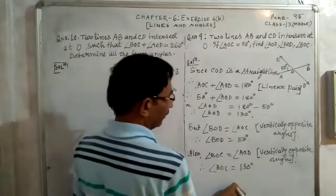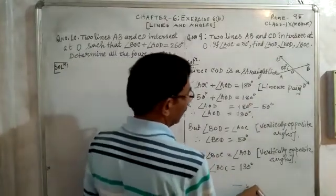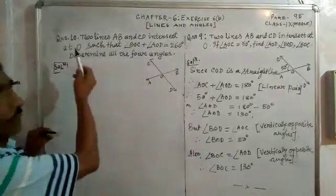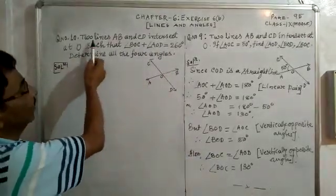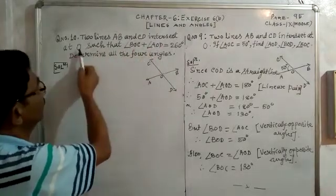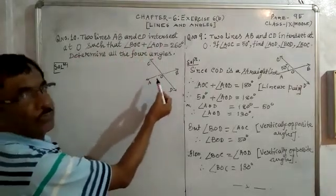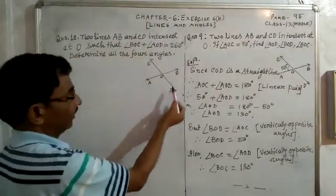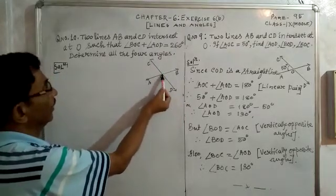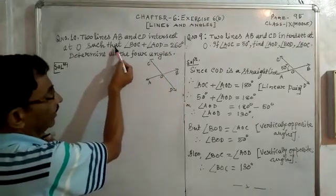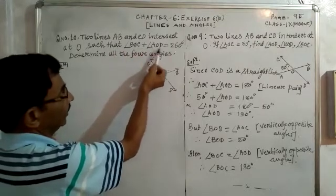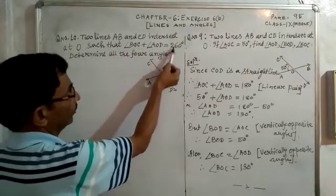Question 9 ends here. Now look at question number 10: two lines AB and CD intersect at O such that angle BOC plus angle AOD is equal to 260 degrees.